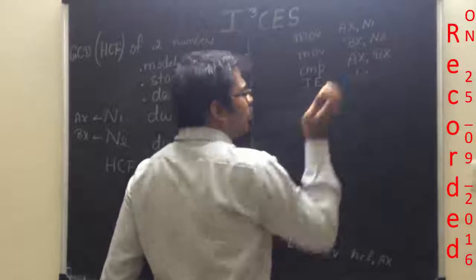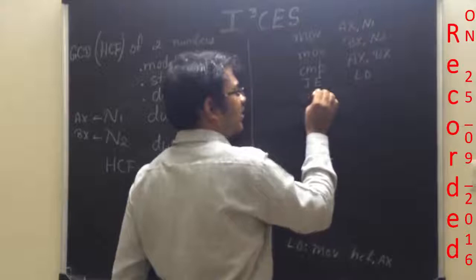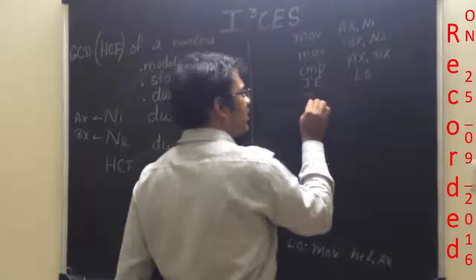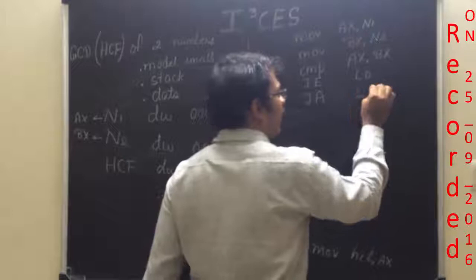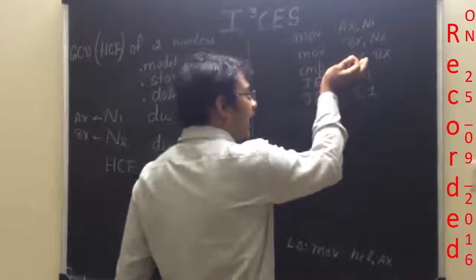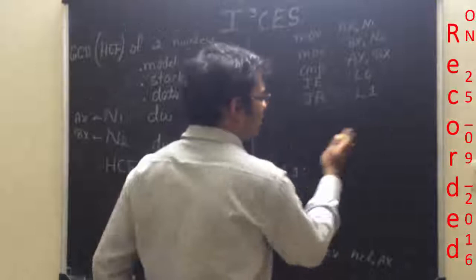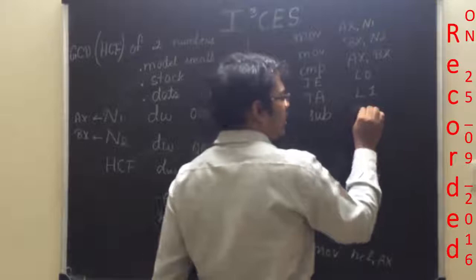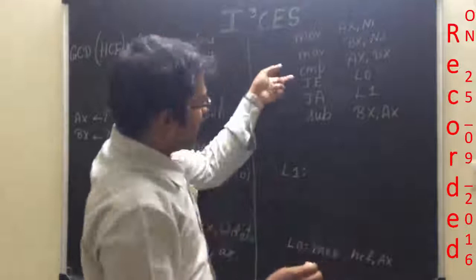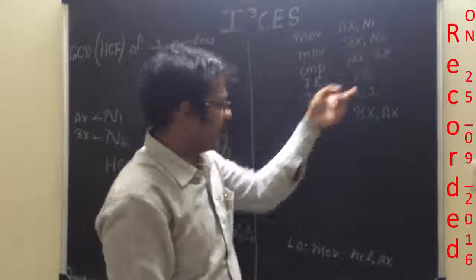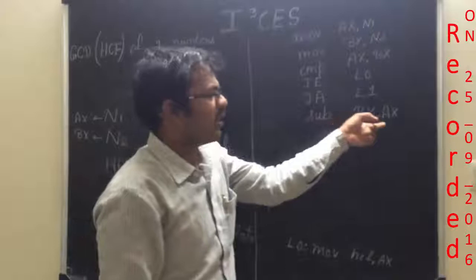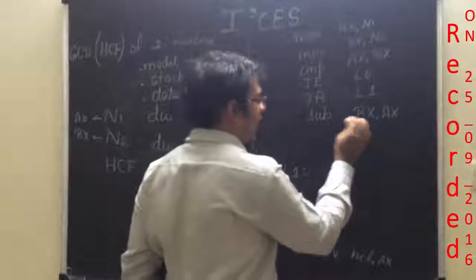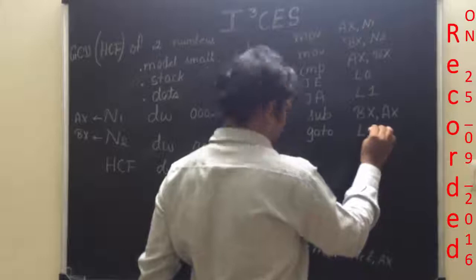If AX is greater than BX, perform a branch operation to label L1. If AX is less than BX — meaning BX is greater — you execute the subtraction: sub BX comma AX, and the result is stored in BX. Then you go to label L3 to again check the condition of whether AX equals BX or not.